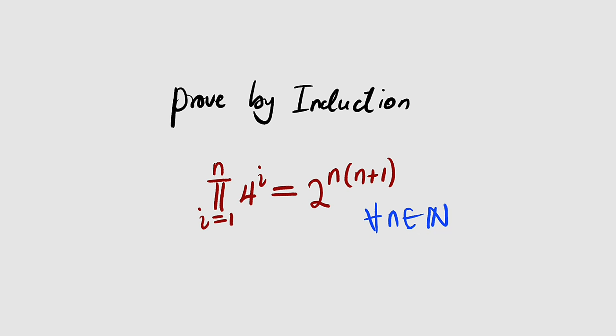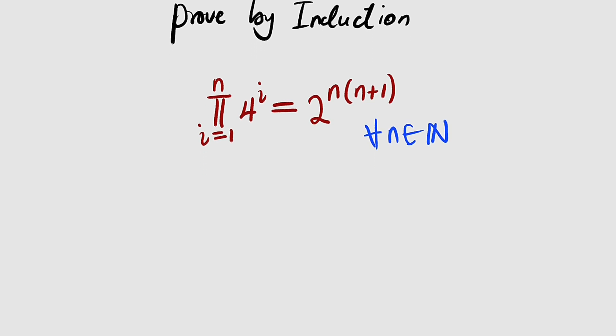As you know, we have three basic steps. In the first step, we are going to test for n equal to 1 to see whether the left and the right hand side are exactly the same.